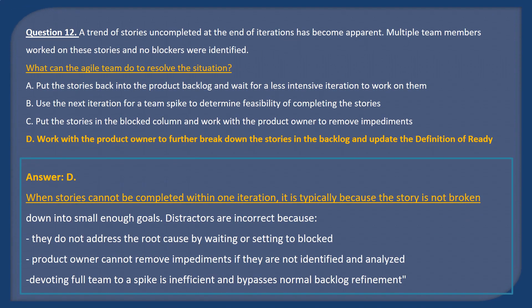Answer D. When stories cannot be completed within one iteration, it is typically because the story is not broken down into small enough goals. Distractors are incorrect because they do not address the root cause — waiting or setting stories as blocked. The product owner cannot remove impediments if they are not identified and analyzed. Devoting the full team to a spike is inefficient and bypasses normal backlog refinement.